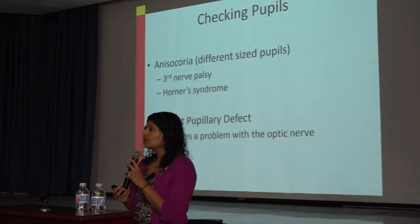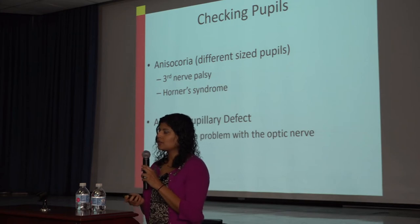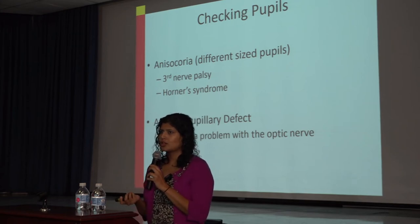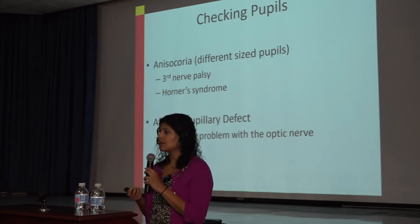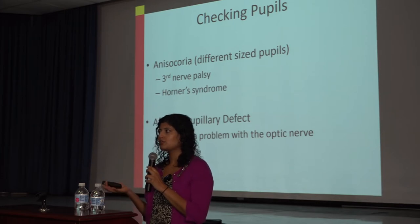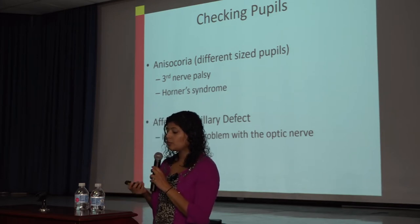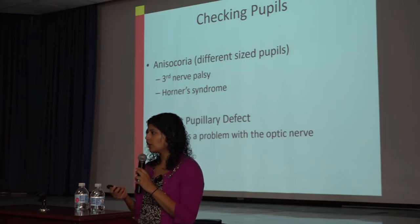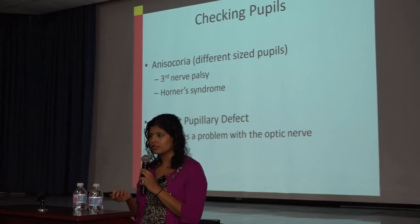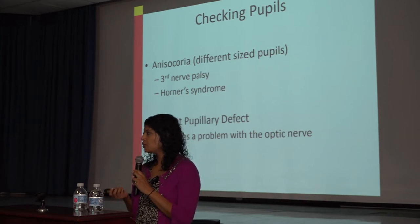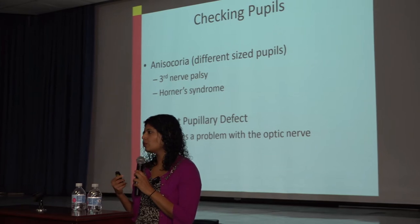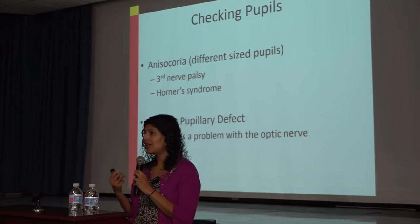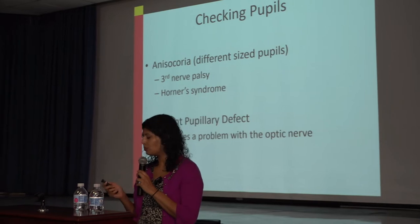Pupils are a bit more challenging but rewarding because you can catch underlying issues from abnormalities in pupillary function. Anisocoria means differently sized pupils. Pupils can be differently sized physiologically, or it could be due to an underlying condition like a third nerve palsy, Horner's syndrome, or an afferent pupillary defect (APD), where there's an abnormality in optic nerve function that you can catch purely by looking at pupillary function.